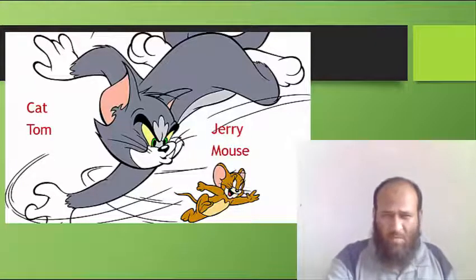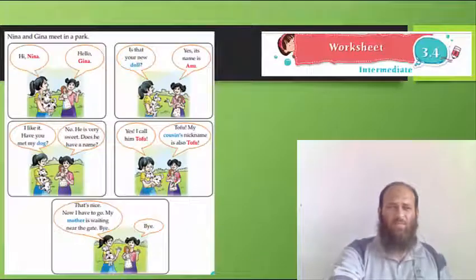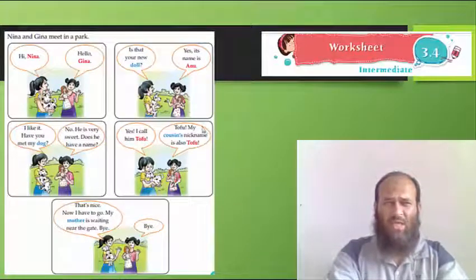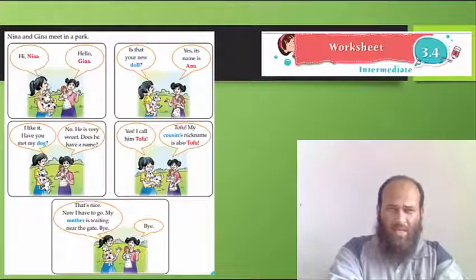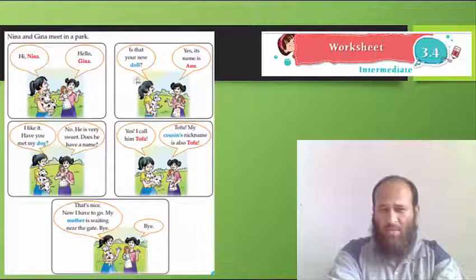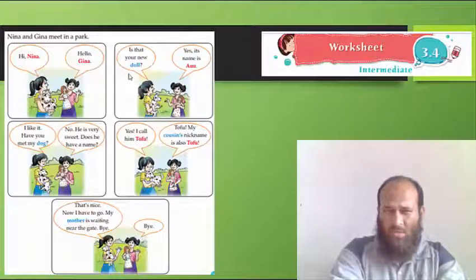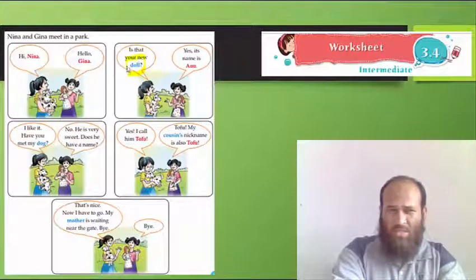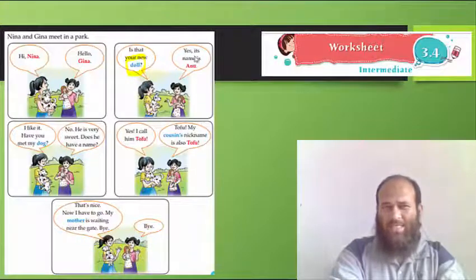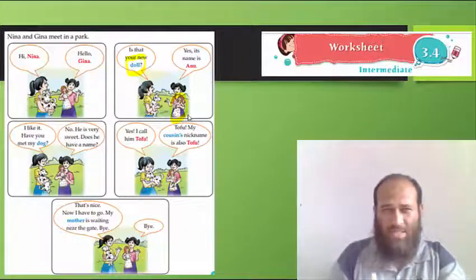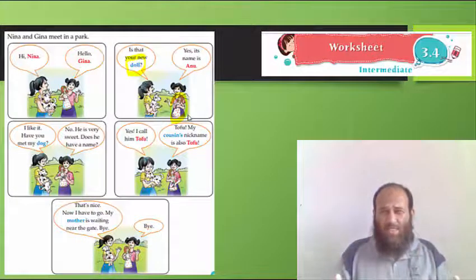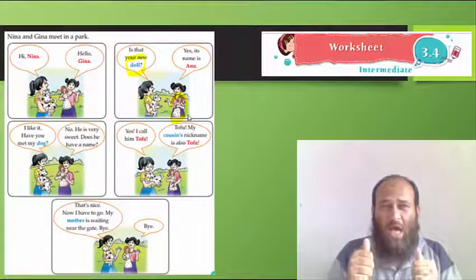For anything, we have general name, like cat and mouse, and special name, like Tom and Jerry. Let's see more examples like this. Here, we have Nina and Gina meet in a park. Hi, Nina. Hello, Gina. Is that your doll? So, she is asking about her doll. Yes, it's name is Anu. So, it is a doll. General name. Special name is Anu.